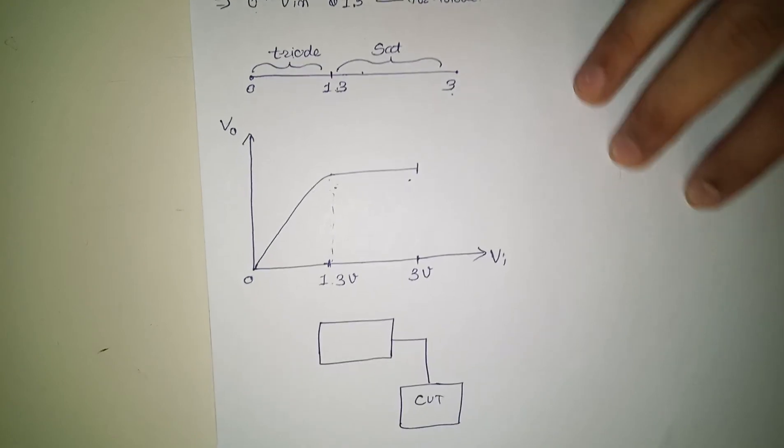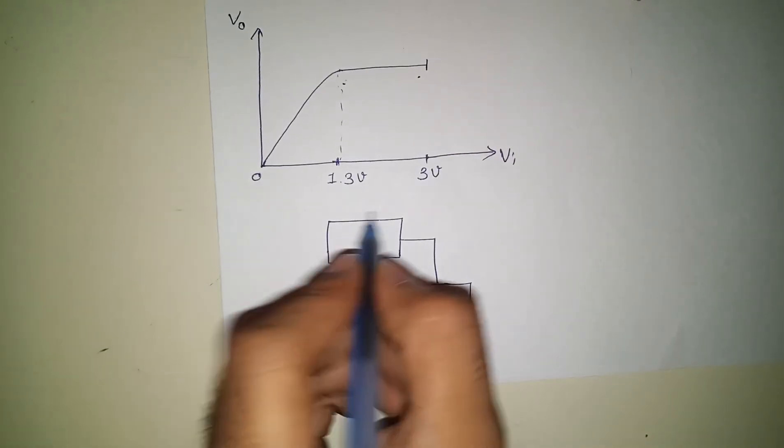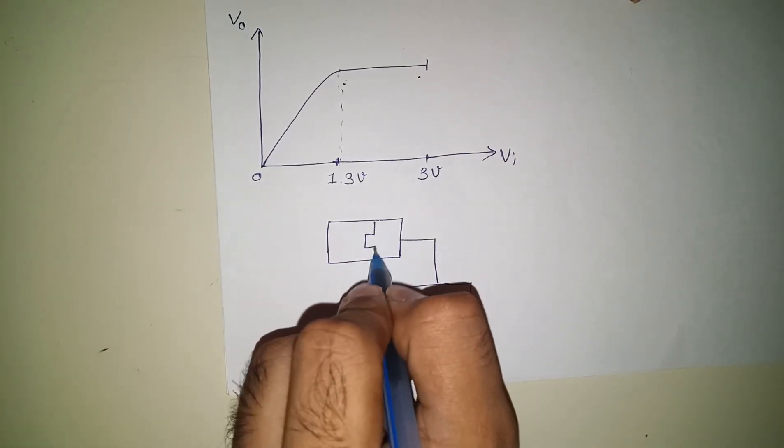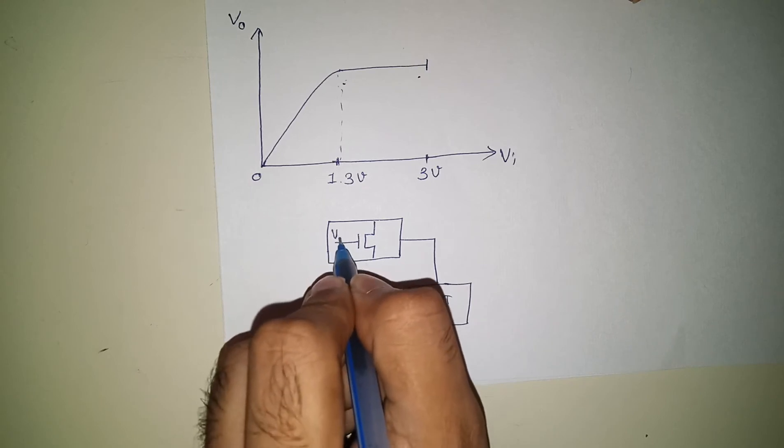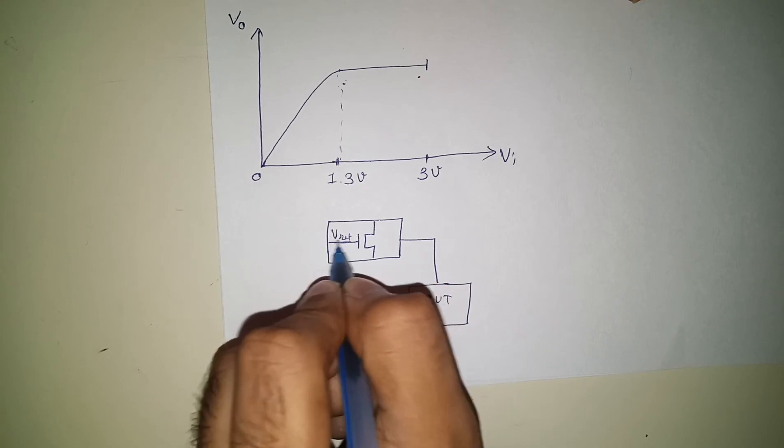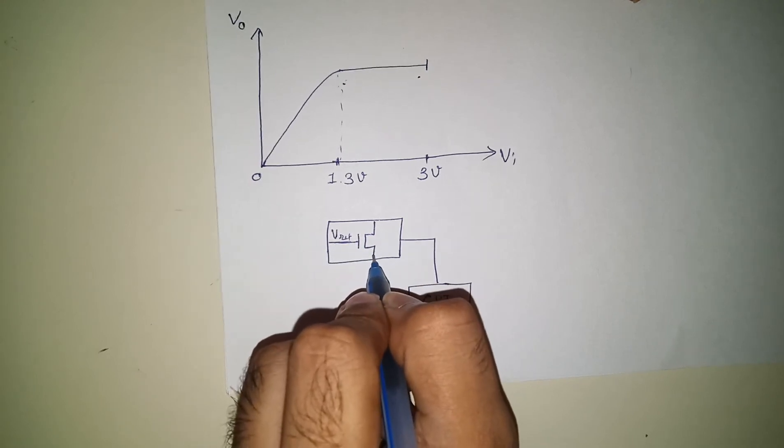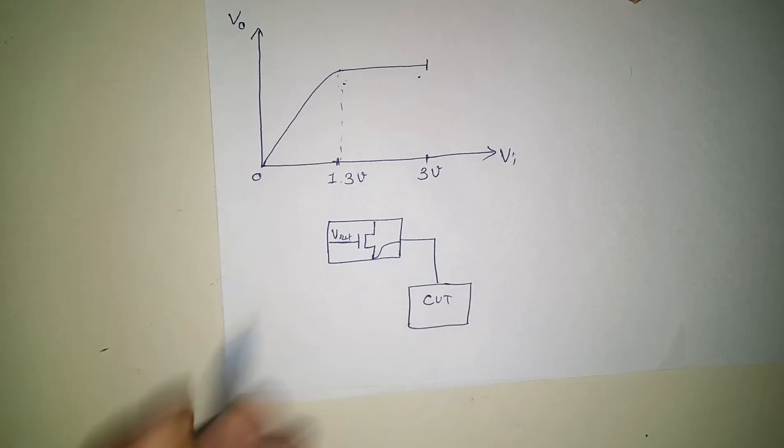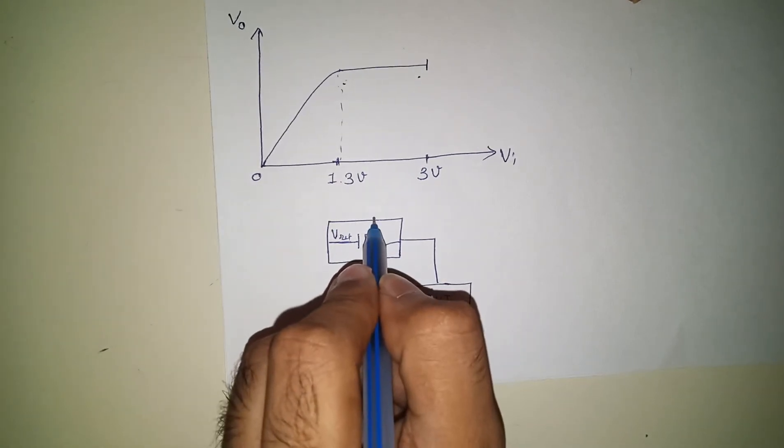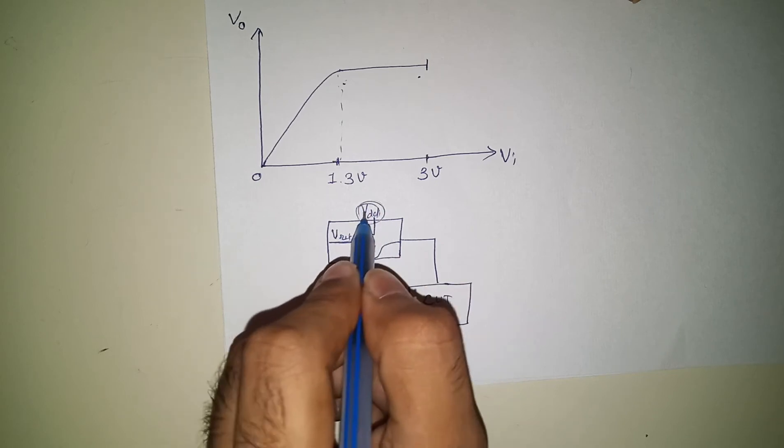And this output you can put here. This can be external building. If this really will change from one point - here in this case 1.3 to 3 volts - output voltage doesn't change.